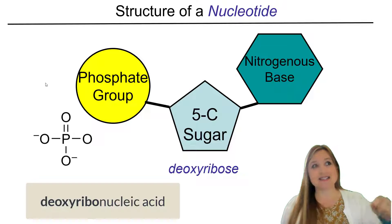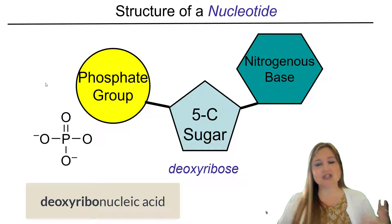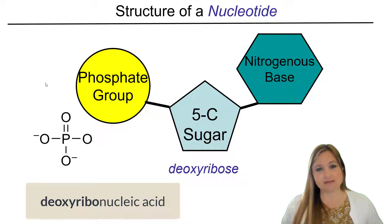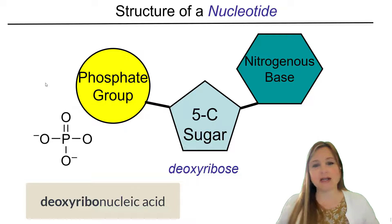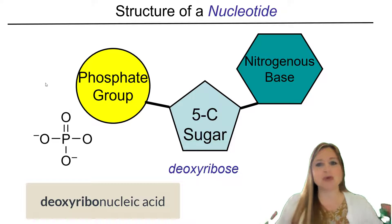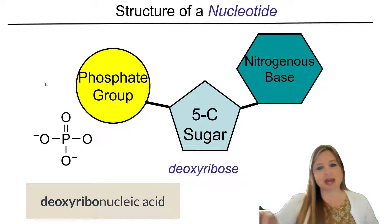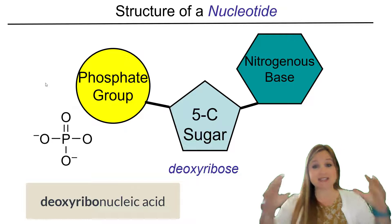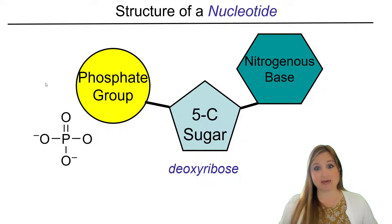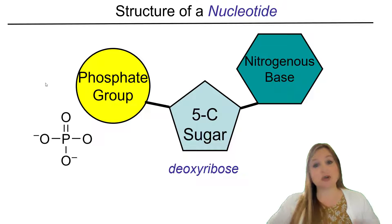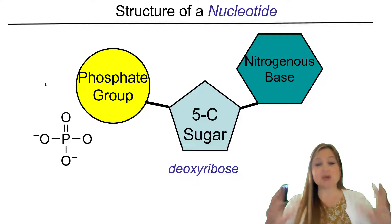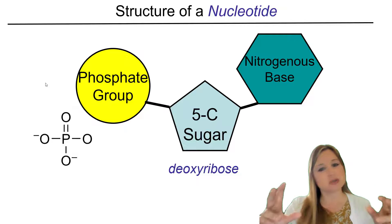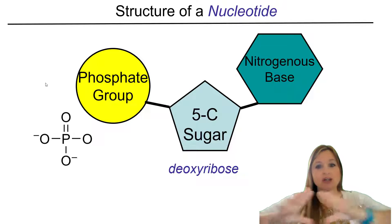And this is where the name deoxyribonucleic acid comes from, because DNA has the sugar deoxyribose in it. When they put the whole name together to make it flow better, they drop the S and the E from deoxyribose — deoxyribonucleic acid. And it's called that because the sugar found in the nucleotides of DNA is deoxyribose. On the other side of that sugar is a base called a nitrogenous base. In human DNA, we're going to have billions of these nucleotides bonded together to form our nucleic acid, our DNA.